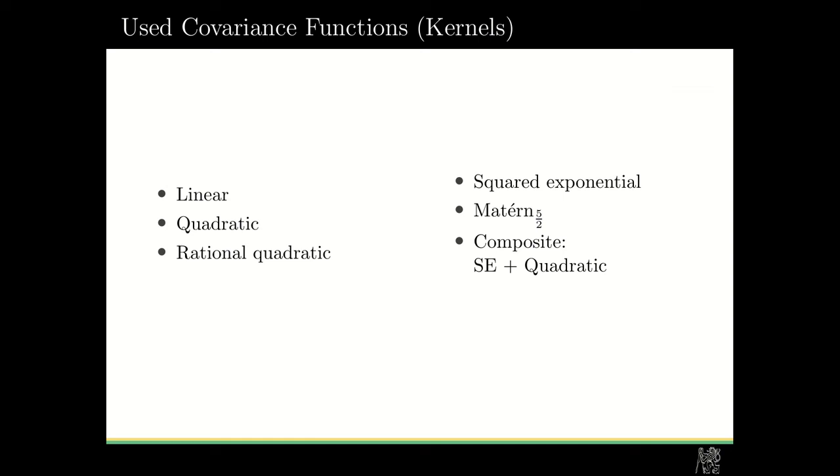So we used the following six covariance functions: linear function, quadratic function, rational quadratic kernel, squared exponential, Matern function, and one composite kernel which consists of squared exponential and quadratic kernel.